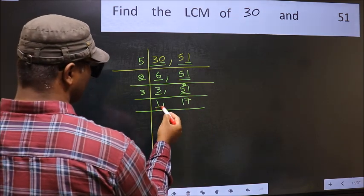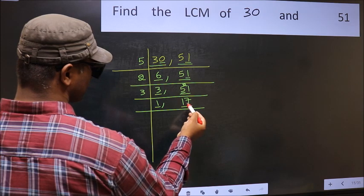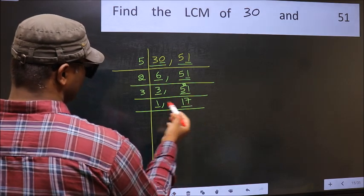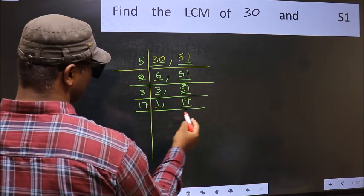Now we got 1 here. So focus on the next number, 17. 17 is a prime number, so 17 times 1 is 17.